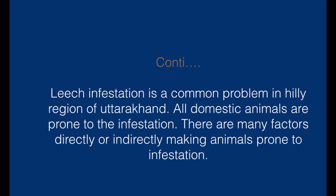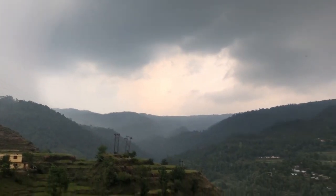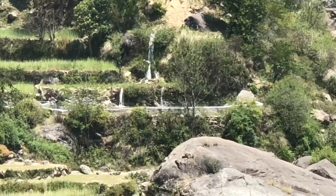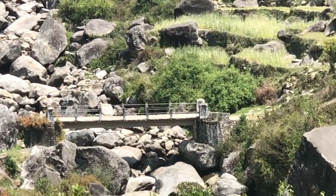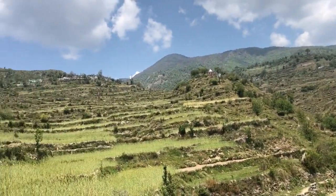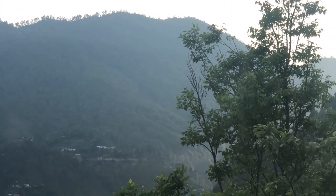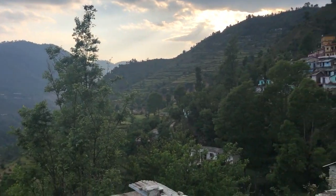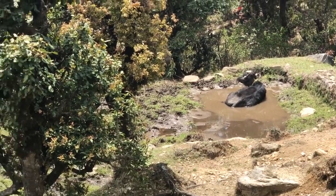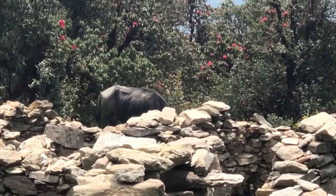Many factors directly or indirectly make animals prone to leach infestation. Frequent and abundant amount of rainfall, presence of multiple fresh water resources and dense vegetation makes the environment favorable for leeches to flourish. All the villages in hilly region of Uttarakhand are situated near a particular water resource which is meant for irrigation, fishing and other agricultural purposes. Due to hilly terrains, semi-intensive method of feeding is practiced, and during day hours animals roam freely and visit water resources whenever they feel thirsty.